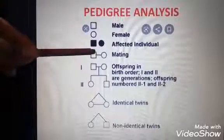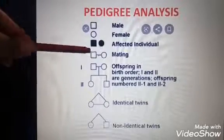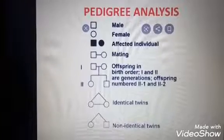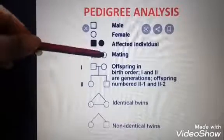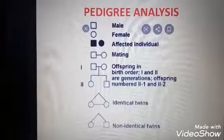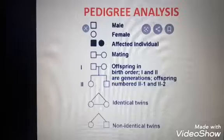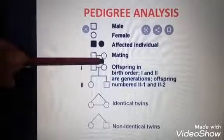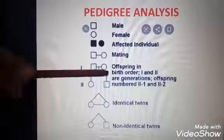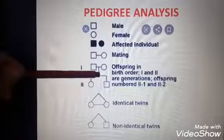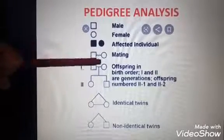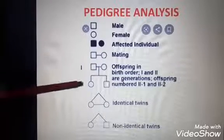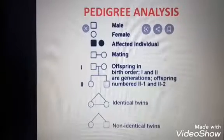A square connected to a circle means a mating pair. If connected by two lines, that means a consanguineous marriage — that is, relatives. When a male and female are connected and then branched again, those branches represent their offspring. The first level is the first generation and the next level is the second generation.